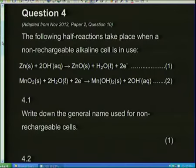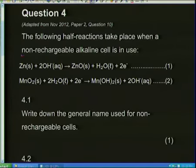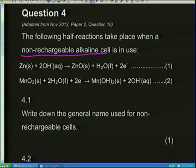Batteries is a really important part of your syllabus — you've got to know the difference between primary cells and secondary cells. Question 4 is adapted from last year's final, question 10. It says the following half reactions take place when a non-rechargeable alkaline cell is in use. This is just like the penlight batteries you find inside torches or anything which can't be recharged. Those little thin long batteries are non-rechargeable cells — you cannot charge them back up.